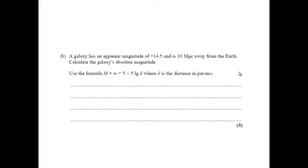Sometimes your job might be to actually calculate the distance, how far away the star is, but we'll just work out M this time just to get to grips with the equation. So a galaxy has an apparent magnitude of 14.5 and is 10 megaparsecs away from the Earth. Calculate the galaxy's absolute magnitude. Use the formula M equals m plus five minus five log d where d is the distance in parsecs.